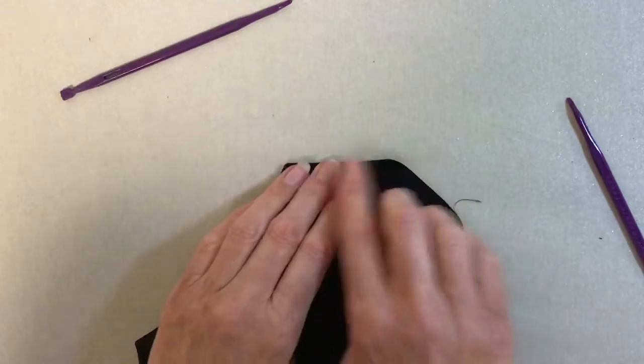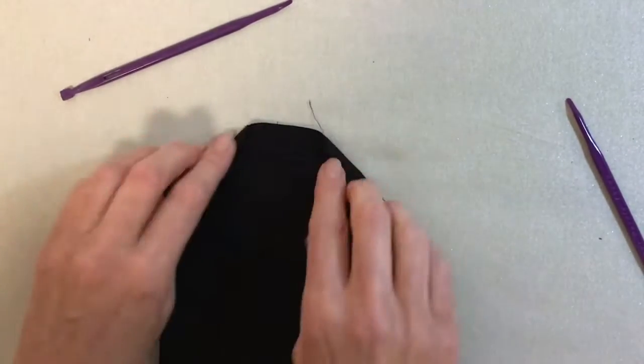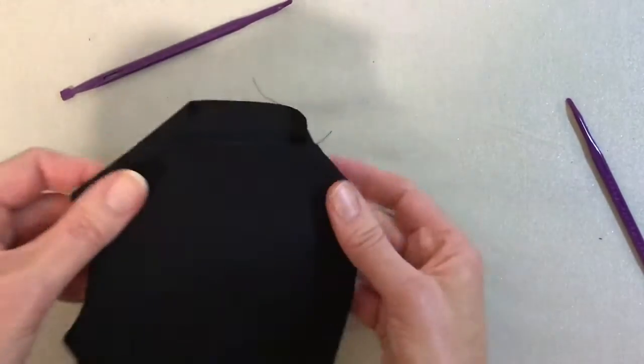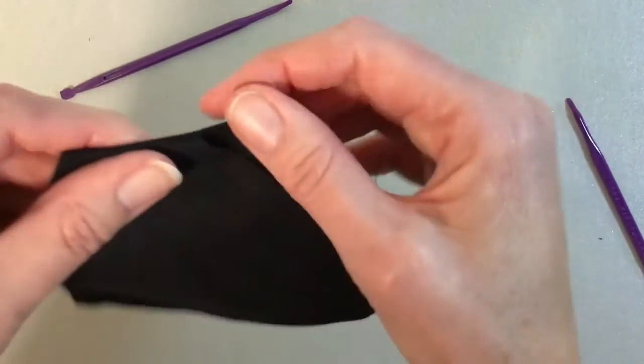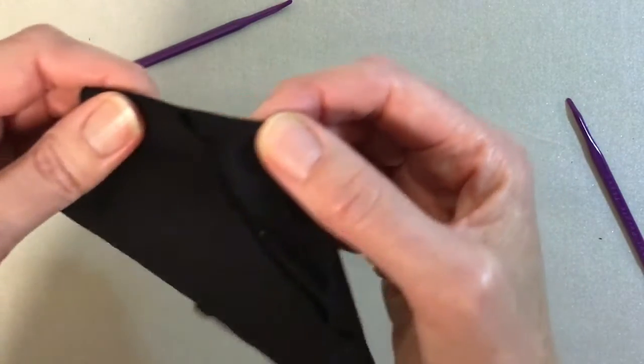I just finger press it down a bit so that I keep those quarter inch seams, which is a little bit hard to see on black. They look like that.